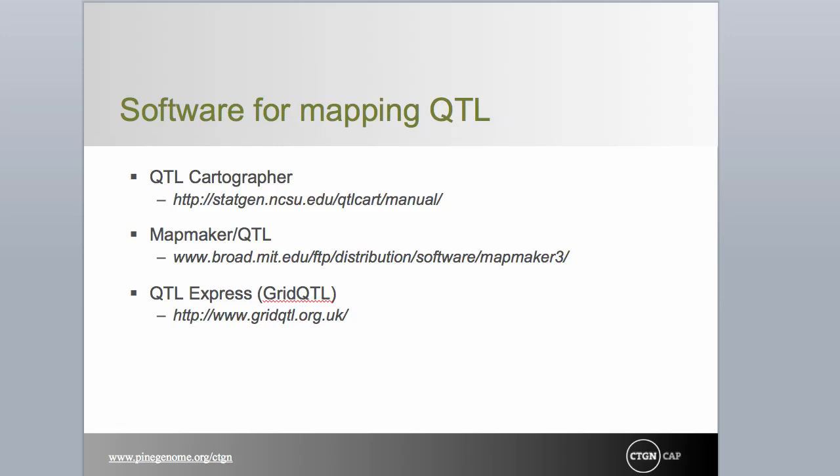A number of QTL detection programs have been developed over the years, continuing to add features and improve algorithms for dealing with mapping concerns. Many programs were developed originally to deal with specific mating types and models like inbred lines. One particular program was developed specifically for dealing with outbred tree pedigrees, eventually released online as QTL Express, though this has now been superseded by an array of analytical tools under the title of GRID-QTL.